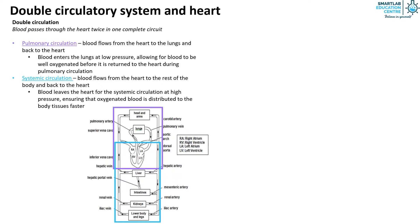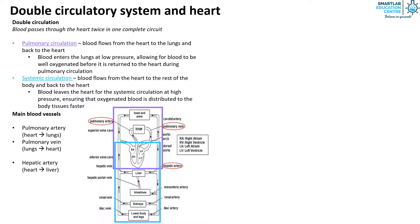These are some of the main blood vessels that are important to note: the pulmonary artery that carries blood from the heart to the lungs, the pulmonary vein that carries blood from the lungs to the heart, and the hepatic artery that carries blood from the heart to the liver.